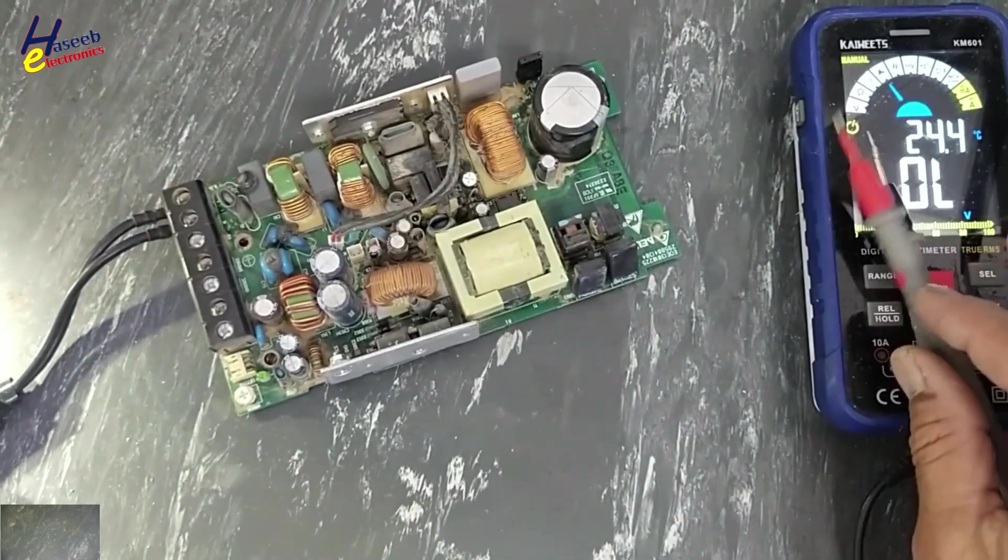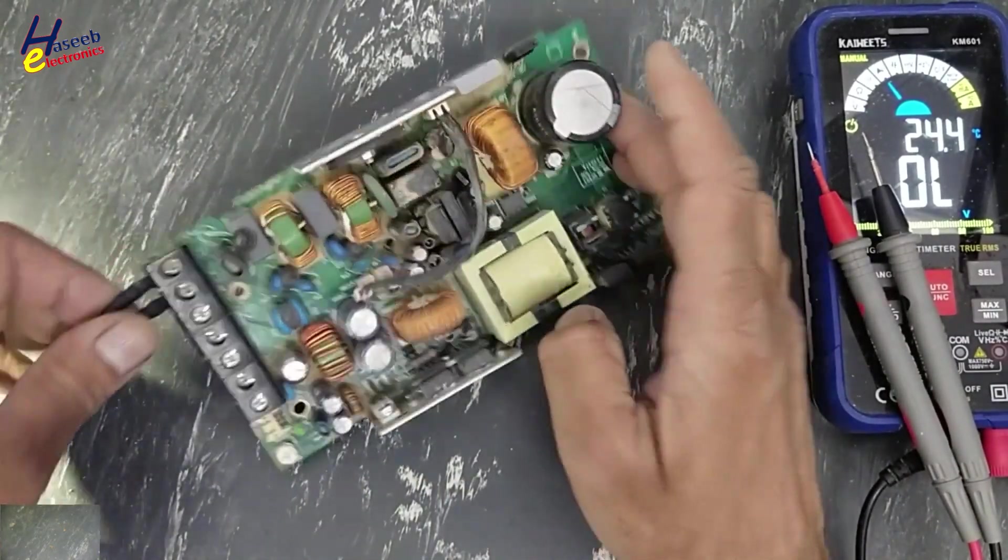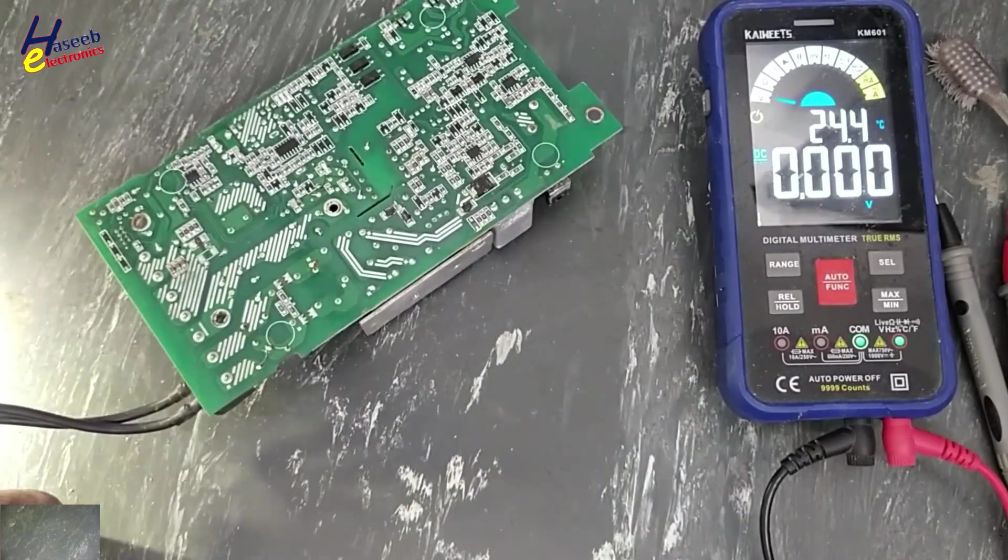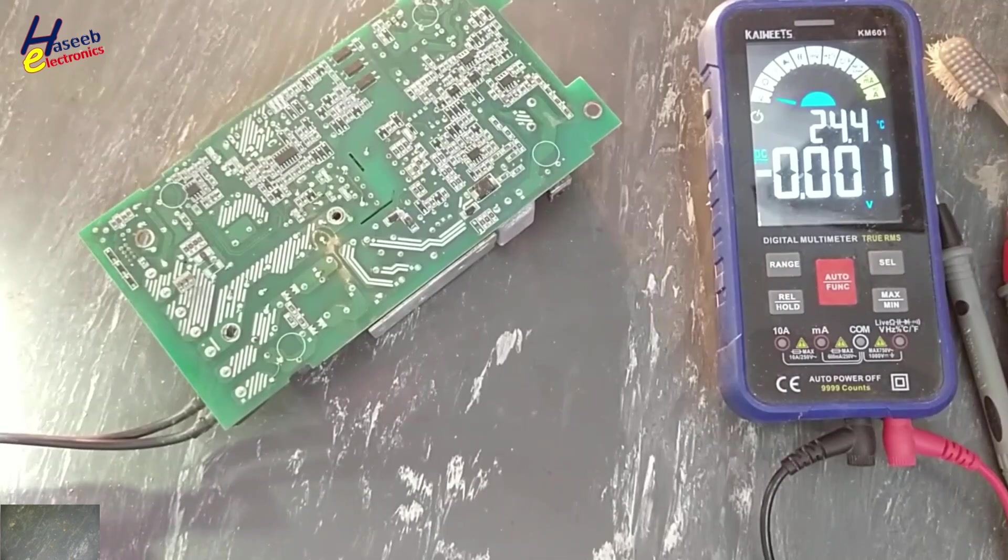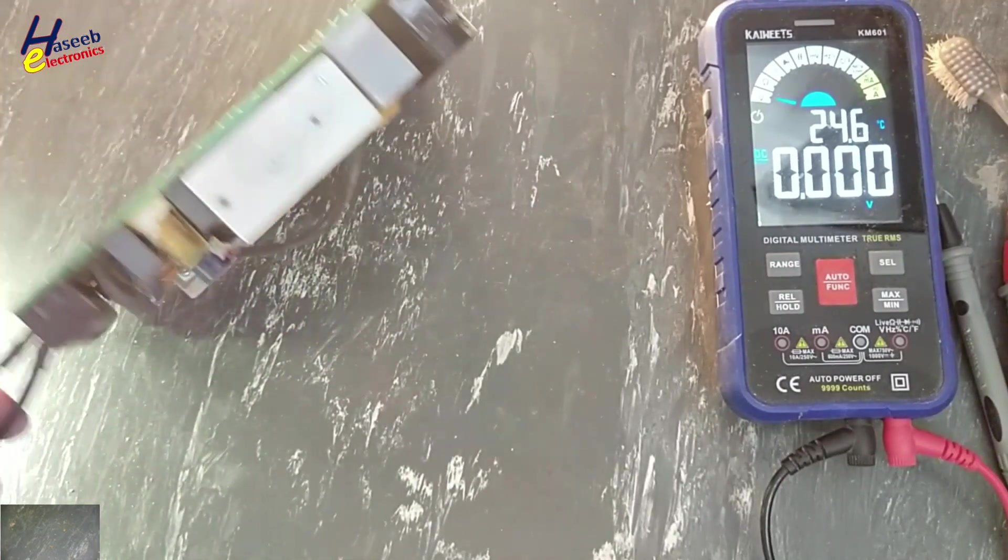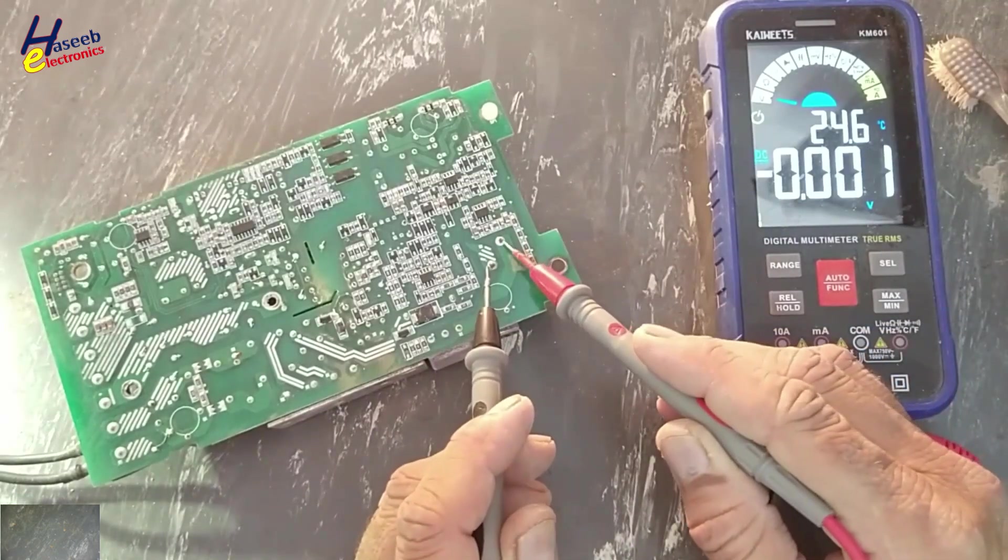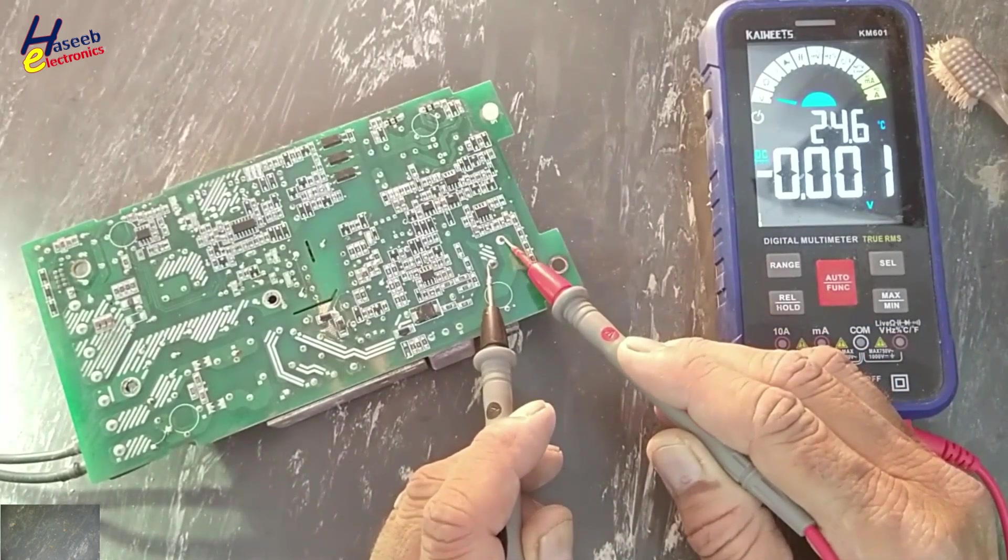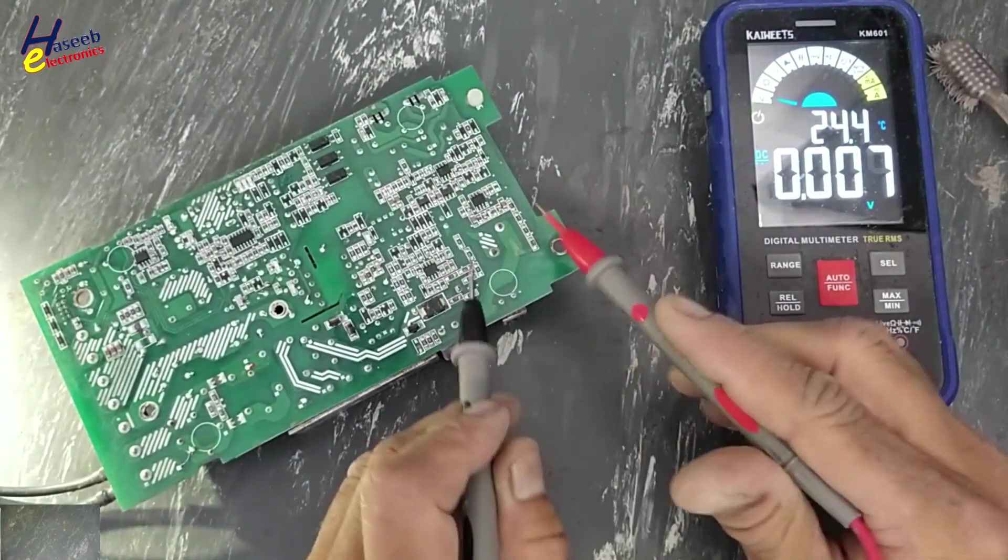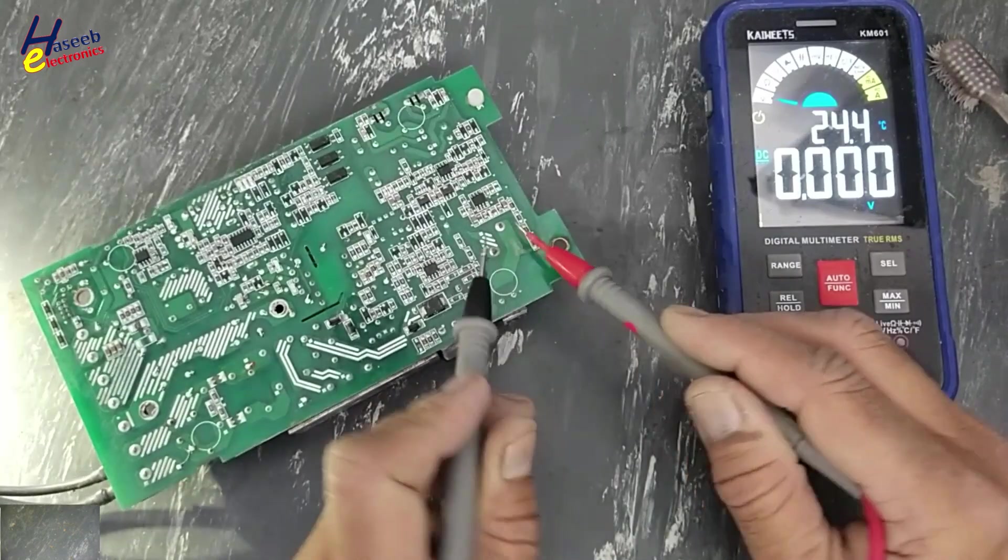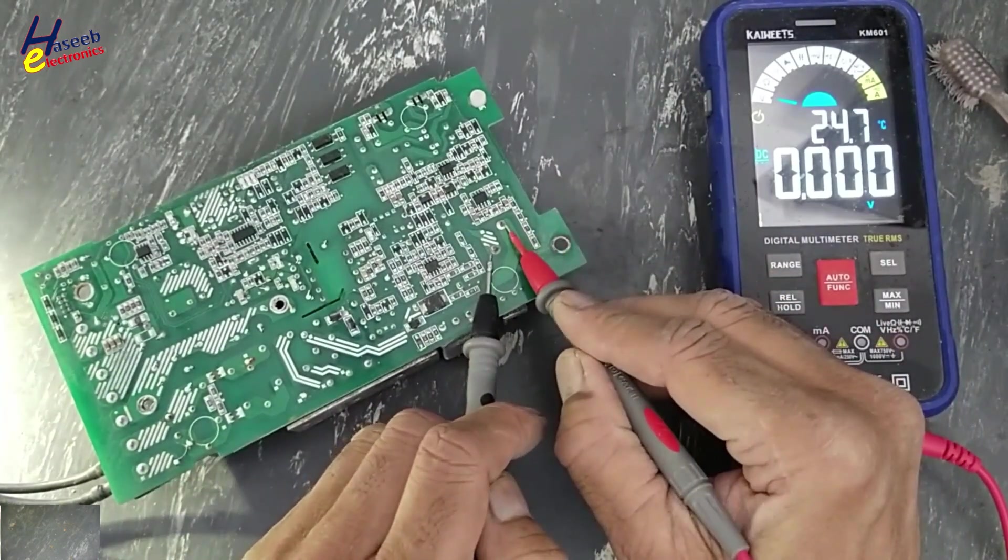First I will connect power and we will see the response of the circuit. The lamp is fully on. If you check DC voltage on this capacitor, no voltage. Now we need to check short circuit on this DC rail. No voltage.